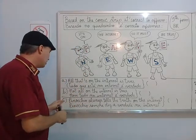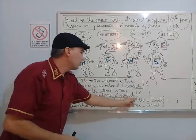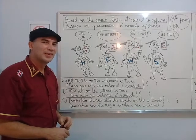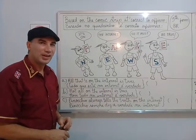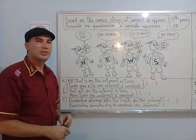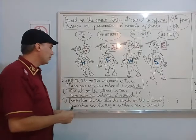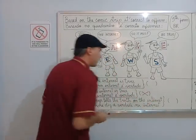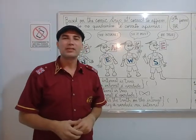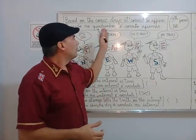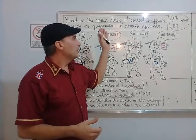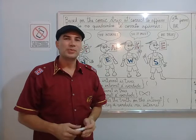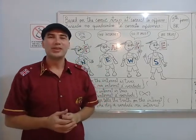And let's see: Pinocular always tells the truth on the internet? No, Pinocular never tells the truth. So the only correct option is letter B. Now we can affirm, we can say that it's correct to affirm that not all on the internet is true. I hope you've enjoyed this video.